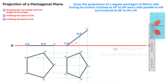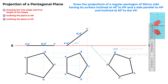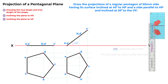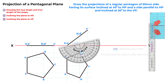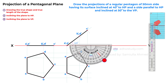This completes step 2 of the process. Now we can proceed to the final step, which involves inclining the plane — already inclined with the horizontal plane — towards the vertical plane. To accomplish this, we'll rotate the top view of the pentagon by 50 degrees as specified in the question. We'll select a point on the reference line and draw a line inclined at 50 degrees with the reference line.